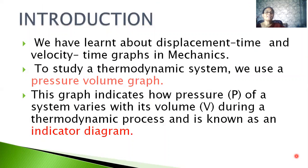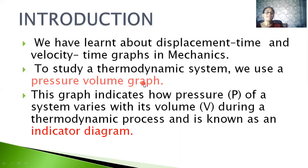We are familiar with displacement-time (S-T) and velocity-time (V-T) graphs, which are used in mechanics. Now, in thermodynamics, in order to study a thermodynamic system, we use a pressure-volume graph, which we call the PV graph or indicator diagram. This graph indicates how pressure P of a system varies with its volume V during a thermodynamic process, and is also known as indicator diagram.